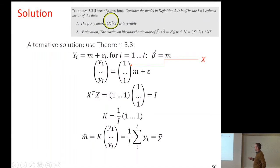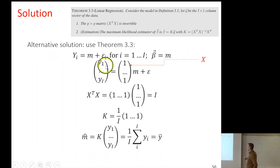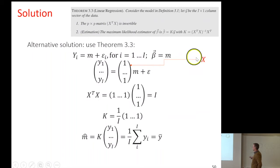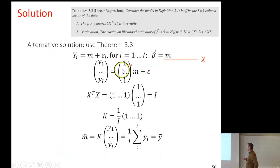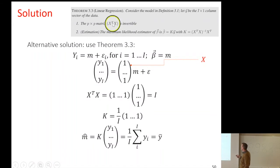This requires finding the design matrix X. We need to put this into a formula where Y is a column vector of all the data points. This can be written as a matrix with ones everywhere multiplied by M plus epsilon. So the X matrix is a column matrix with one row per data point and one column per dimension of beta. Once we have that, we apply the linear regression formula.